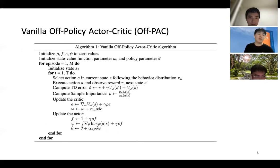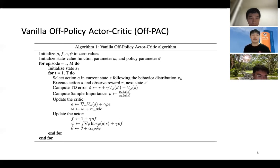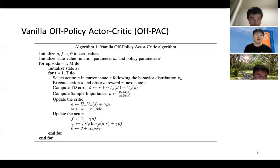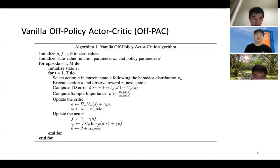In each step, we select an action A in the current state S following the behavior distribution pi_b. We execute this action and get a reward R and next state S'. Next, we compute the TD error and the sample importance weight. We then update the critic and the actor using the mentioned rules and also the eligibility traces to ensure stability and convergence properties.